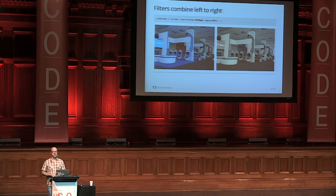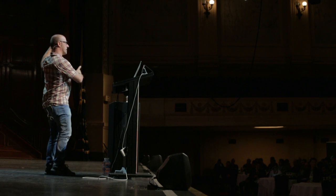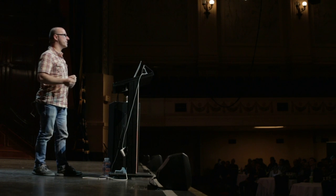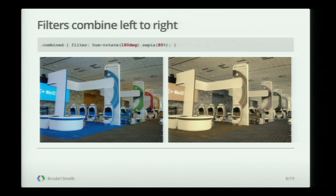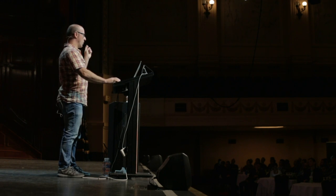The way filters work — that was an example of one filter. Now there are a bunch of different preset filters in CSS filters, and they combine left to right. So you can list a whole lot of them one after the other, and your original image will get one filter applied, then the next one, then the next one. As you can see here, I've spun around the hue 180 degrees and then applied sepia. But of course, if you swap those two around, you get a completely different result — you're doing the sepia first, and then hue-rotating the sepia, giving you a different color. So order is very important.